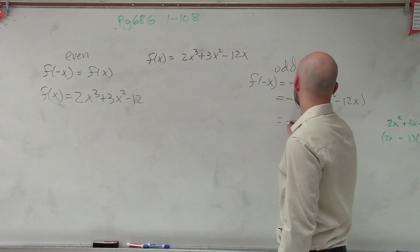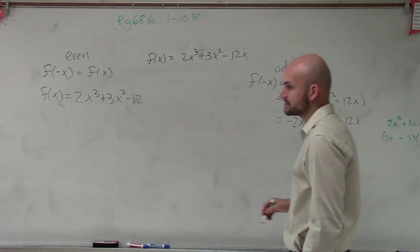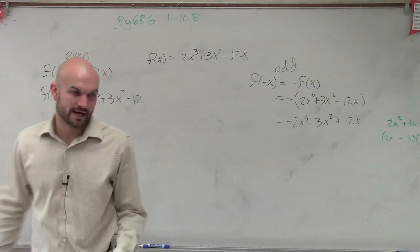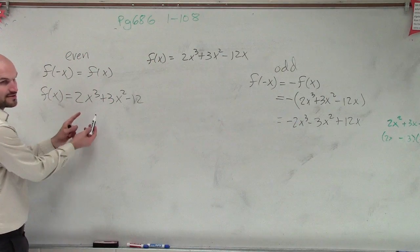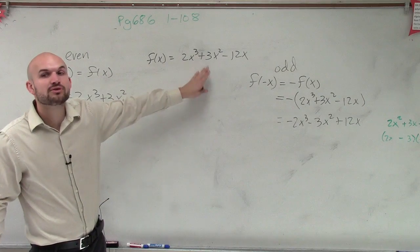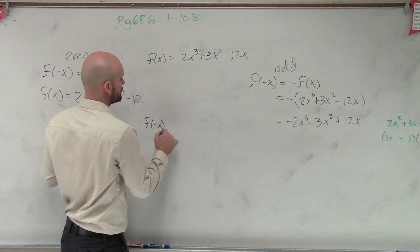Well, that looks like negative 2x cubed minus 3x squared plus 12x. Okay, that's what negative f of x looks like. This is what f of x looks like. So what we need to do is now plug in f of negative x and see what we get.